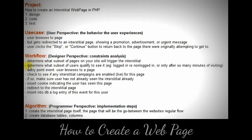The next thing to determine is what subset of users will be seeing the interstitial. You may not want every single user to qualify for seeing it — you may want only people who are logged in or from certain demographics. These are all business rules, and this is information that the programmer needs to know before he starts writing the code.